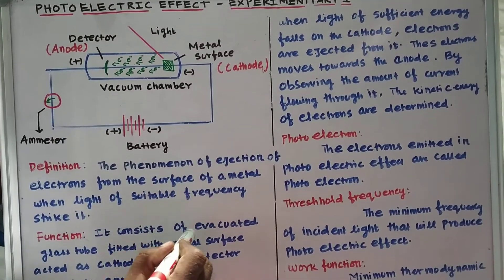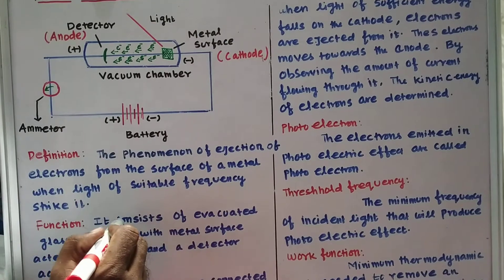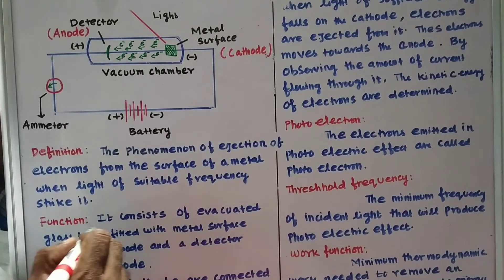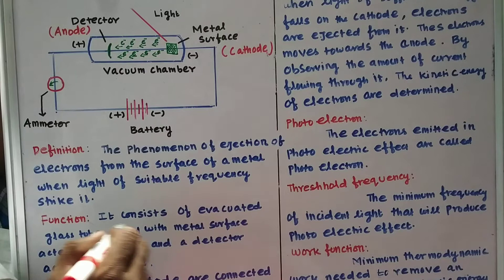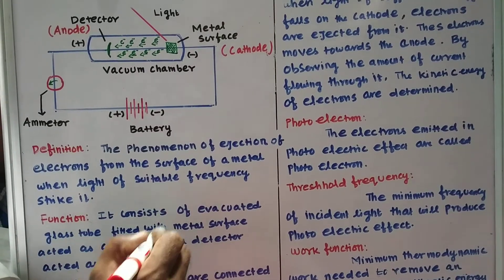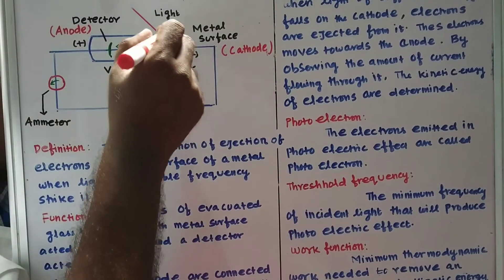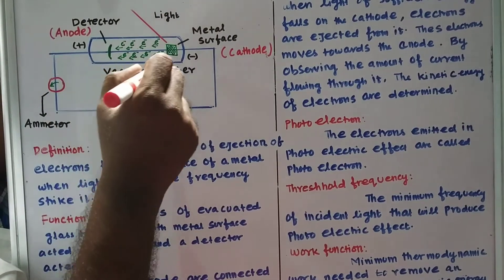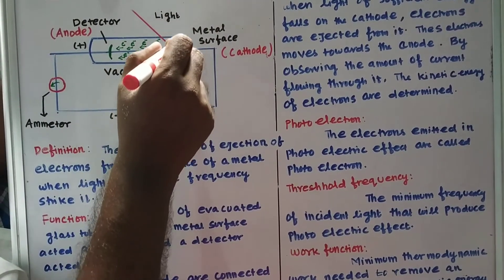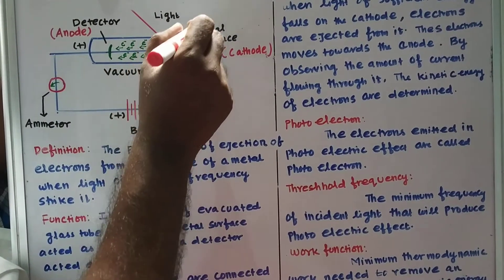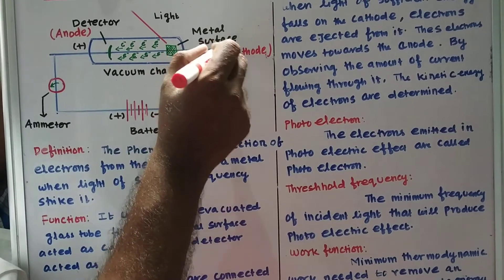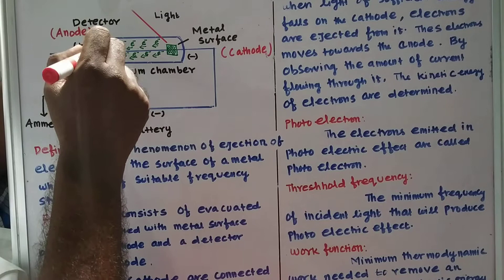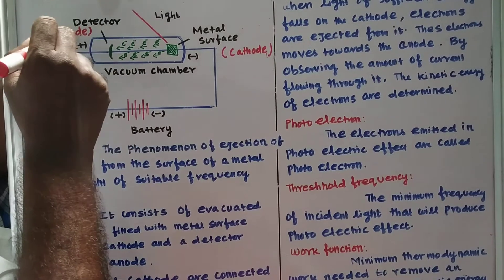The apparatus consists of an evacuated glass tube — also called a vacuum chamber — fitted with a metal surface that acts as the cathode at one end, and a detector that acts as the anode at the other end.